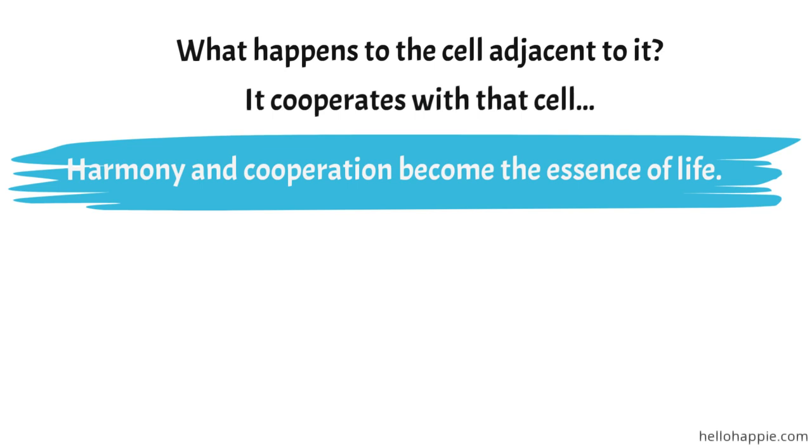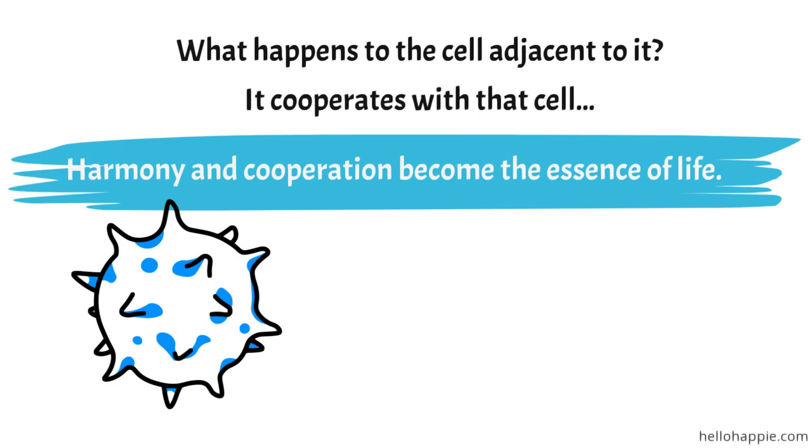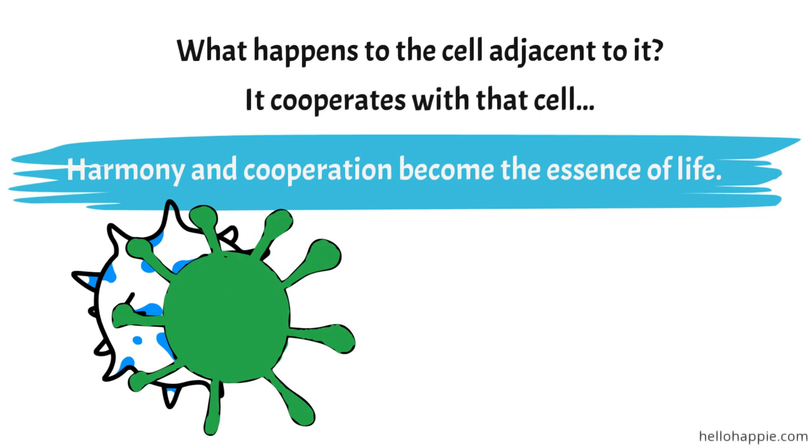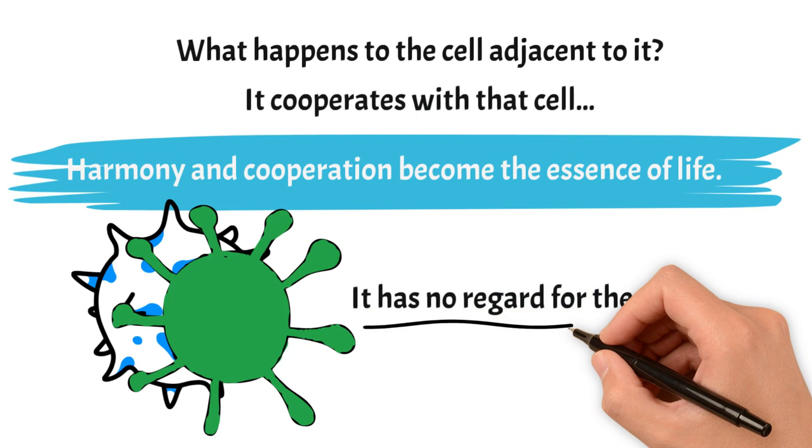When there is not ease or serenity or peace within a cell, that is when there is dis-ease or disharmony or an absence of serenity or arrogance rather than peace or aggressiveness, what happens to the cell next to it? It gobbles it up. It gets aggressive. It eats it up. It has no reference to the whole. Something that has no reference to the whole means that it has no regard for the whole.